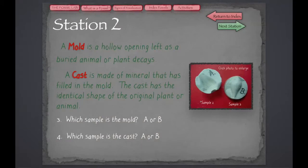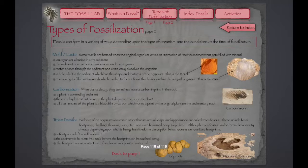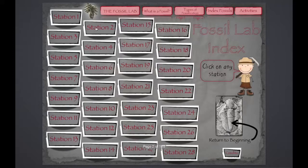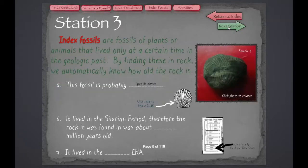Here at Station 2, we're talking about mold and cast fossils. Again, in Types of Fossilization, on page 2, I can read about molds and casts, and I can see images of actual fossils. So at Station 2, I can continue answering questions and move on to the next station.